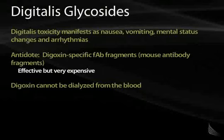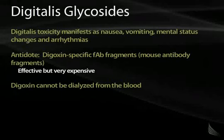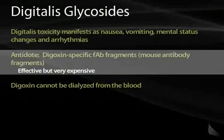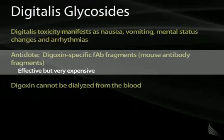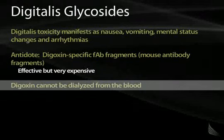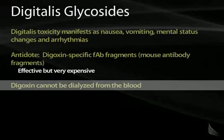Digitalis toxicity is becoming less common as we use digoxin less. It manifests usually as nausea, vomiting, mental status changes, and arrhythmias. The antidote is Digibind or digoxin-specific FAB, which is an antibody fragment that binds digoxin and removes it from the body. Because digoxin binds very strongly to plasma proteins, it cannot be dialyzed, so you have to decide whether the patient needs digoxin FAB or if you can simply wait for levels to come down.